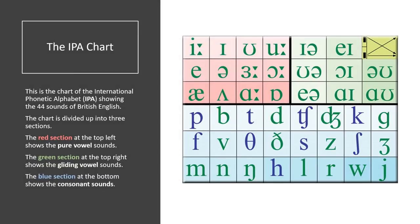This is the chart of the International Phonetic Alphabet, IPA, showing the 44 sounds of British English. The chart is divided up into three sections. The red section at the top left shows the pure vowel sounds. The green section at the top right shows the gliding vowel sounds. The blue section at the bottom shows the consonant sounds.